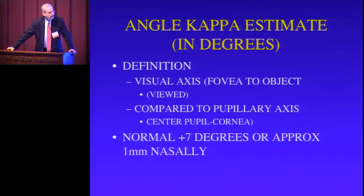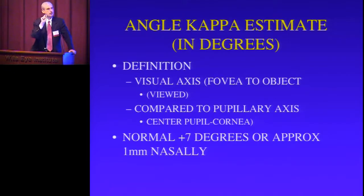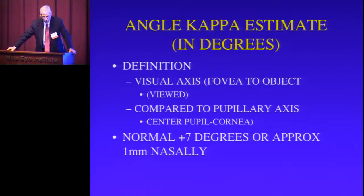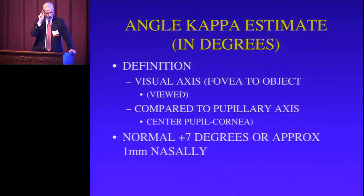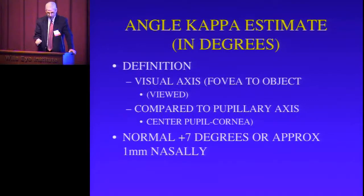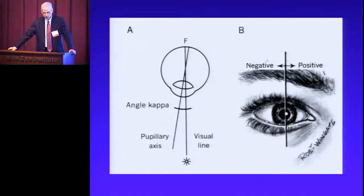The angle kappa — if you shine a light in someone's eyes and notice that the light reflects as centered in each eye, if you look really carefully, even though it is symmetrical in each eye, it's actually slightly nasal to the center. That's based on the angle kappa, which is the angle between the visual axis — the line connecting the fovea, which is the central part of the eye we use to see with, to the object viewed — to a line drawn directly through the cornea and pupil.